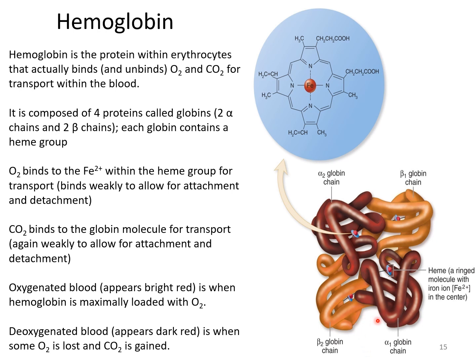Carbon monoxide poisoning occurs because carbon monoxide has a very strong attachment to hemoglobin — much stronger than oxygen. If exposed to carbon monoxide, it saturates the heme groups and doesn't want to come off, so oxygen cannot bind. This robs the body of oxygen. Oxygenated blood appears bright red when hemoglobin is maximally loaded with four oxygen molecules. Deoxygenated blood appears darker once oxygen is lost and carbon dioxide is gained.